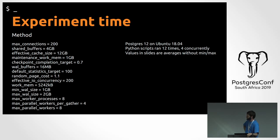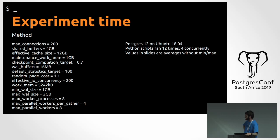Experiment time. These are the things that I changed in my Postgres config. I installed Postgres 12 on 18.04. I made a Python script that runs each query five times with four of them concurrently. All of the values in the slides are averages without the min and the max values, so we heated up the cache a bit. If anything was weird — maybe some other query stopped and this query went through quickly — it was sort of ignored. But I'll show a graph of all of the queries together so we can see them.